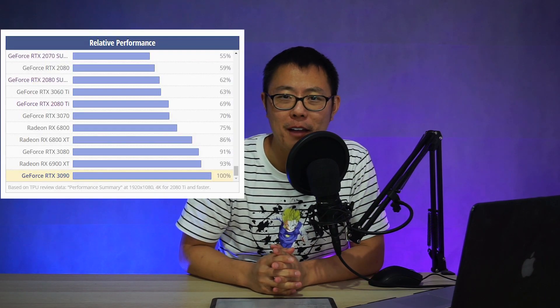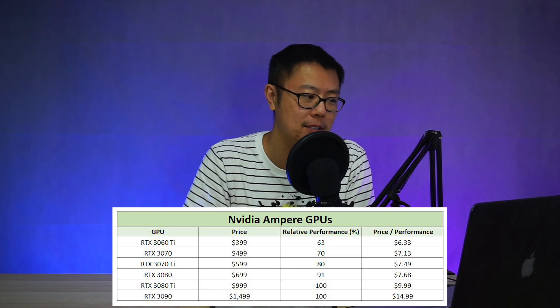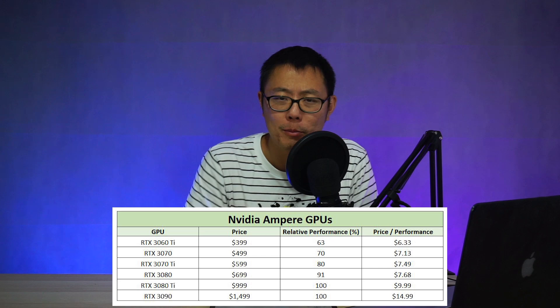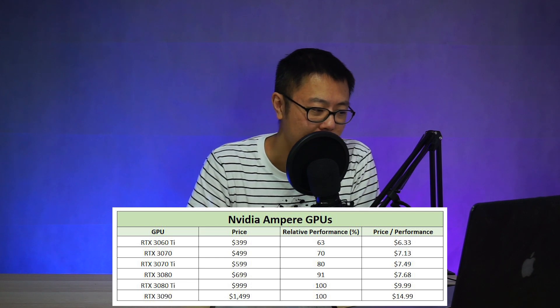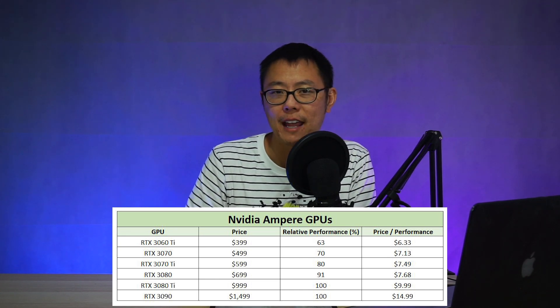Let's talk about the performance of the 3080 Ti compared to all the other cards. I've taken this from Tech Power Up, looking at relative performance compared to the 3090. The 3090 is set at 100% performance, and I'm giving the 3080 Ti 100% as well, giving it the benefit of the doubt — even though it'll be somewhere between the 3080 and 3090, maybe around 95%. The 3080 is 91%, the 3070 Ti is 80%, the 3070 is 70%, and the 3060 Ti is 63%. So you can see it drops about 10% each step.